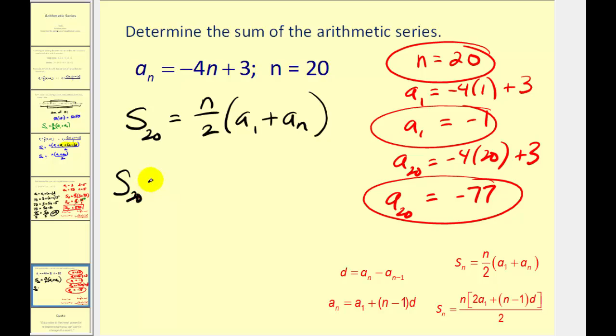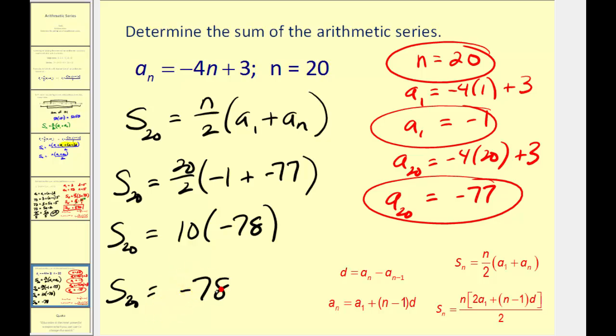So the sum of the first twenty terms is equal to twenty divided by two times the quantity of negative one plus negative seventy-seven. So we're going to have ten times negative seventy-eight. So the partial sum is equal to negative seven hundred eighty.